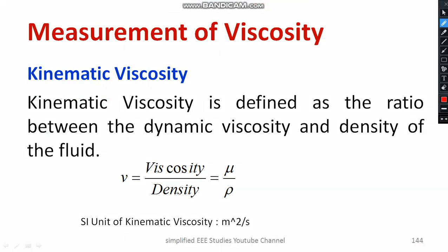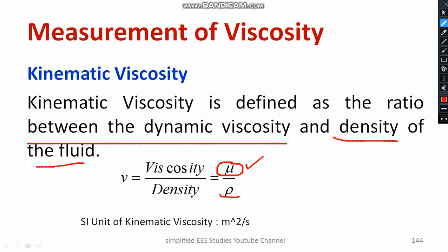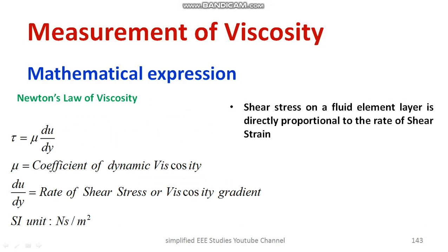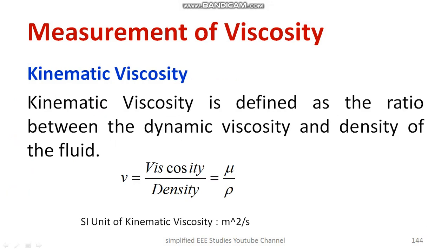You need to be familiar with what kinematic viscosity means. Kinematic viscosity is defined as the ratio between dynamic viscosity and the density of the fluid. Density of the fluid is computed by taking the ratio of mass to volume, denoted by the letter rho. Dynamic viscosity is represented by the letter mu. The unit of kinematic viscosity is meter square per second. You can compare: dynamic viscosity has the unit Newton-second per meter square, while kinematic viscosity has the unit meter square per second. This is an important point for competitive examinations and MCQ-type exams.